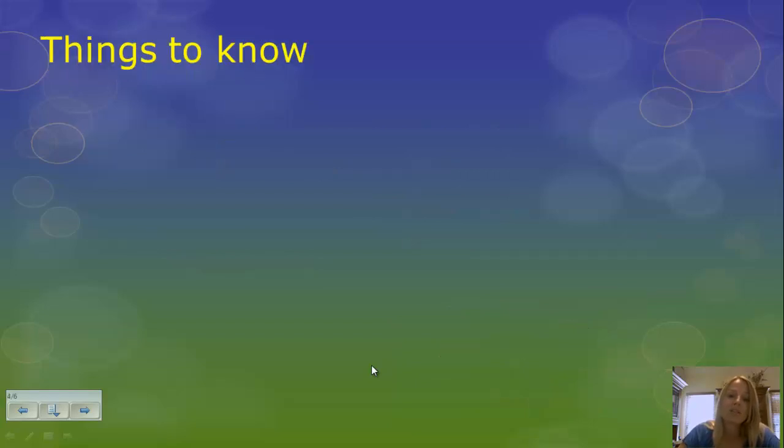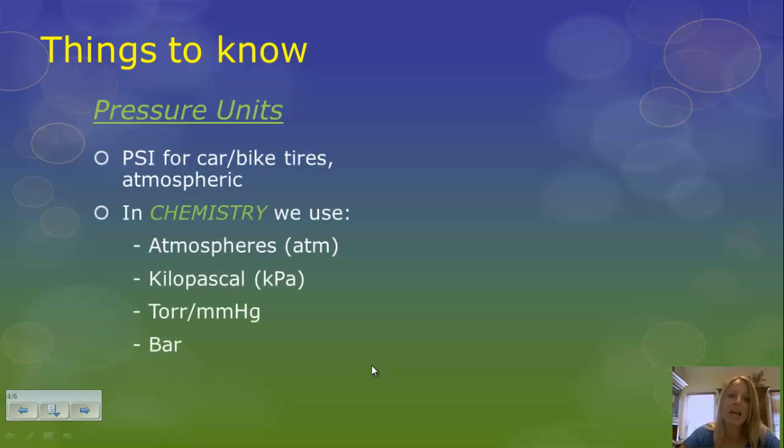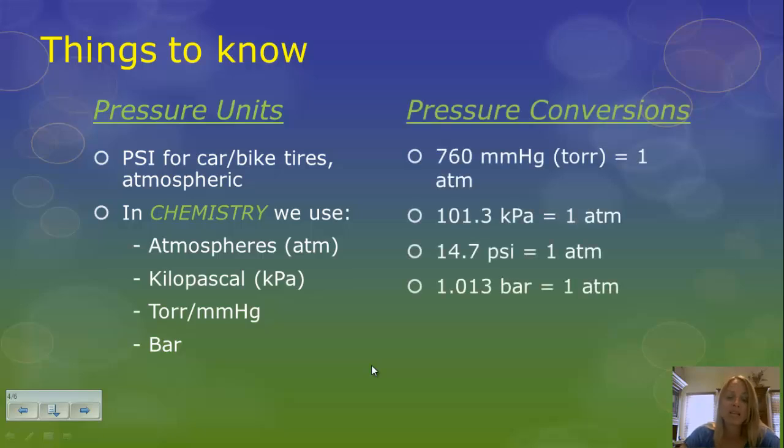Things you need to know to be successful in this unit. There are pressure units for gases, and those are psi, which you should be familiar with or may have used before if you pumped up a bicycle tire or your car tires. That is pounds per square inch. In chemistry, however, we're going to use atmospheres, kilopascals, millimeters of mercury, torr, bars. And you're going to be asked to convert between these units. So doing the factor labeling and the dimensional analysis you have used in previous units.